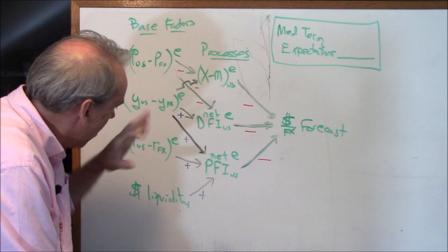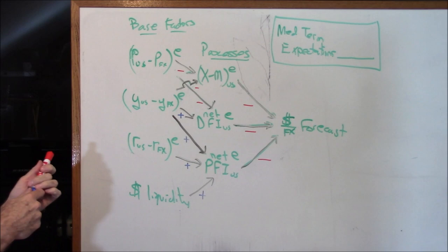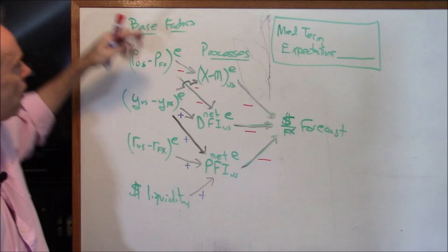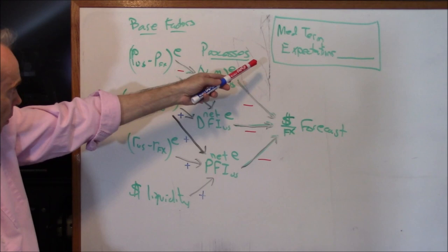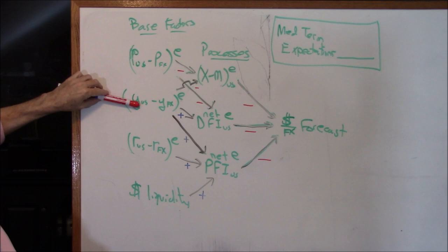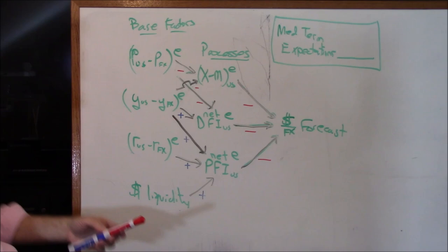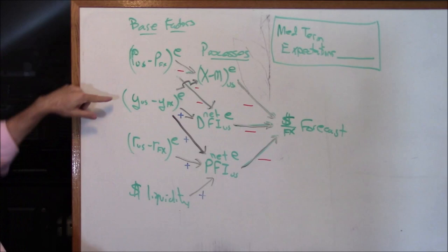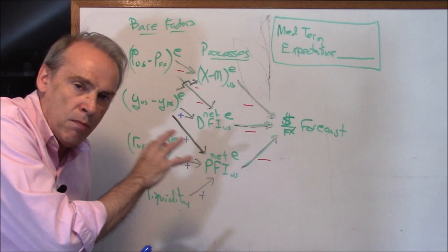So that's the basic setup. You, the currency dealer, are trying to come up with this FX forecast. The medium-term expectations box is in the back of your head, causing you to interpret all the base factors in different ways because you are pro-dollar, anti-dollar, or neutral. You are trying to figure out what you think relative inflation rates, relative GDP growth rates, relative interest rates, and the dollar's value as international savings are going to be. This is your basic roadmap.